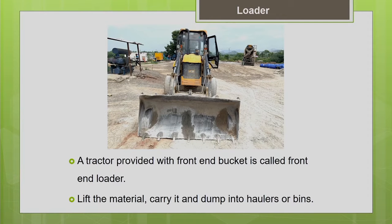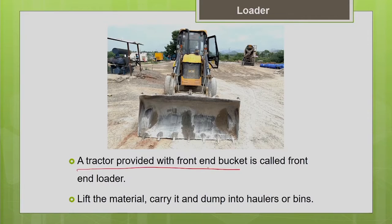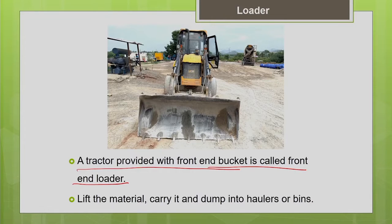As the name indicates, a front end loader is basically a tractor with a bucket at the front end. The basic difference between this machine and earlier machines like the bulldozer and scraper is that this machine has a mechanism — a boom — which allows it to lift the material and load it into a truck. This is not possible with the bulldozer or scraper, where you cannot lift the material and load it into a truck.